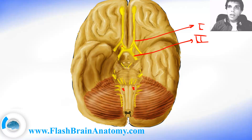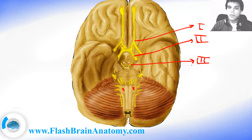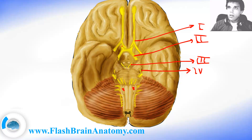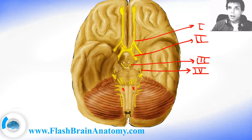Cranial nerve number three is the oculomotor nerve and it innervates the superior oblique muscle of the eye. Then we have cranial nerve number four, which innervates the sphincter muscle of the pupil and also innervates the ciliary muscle in the eye.